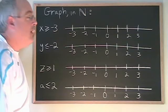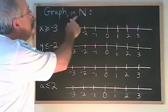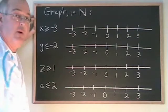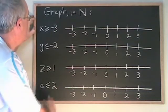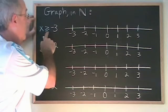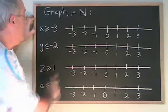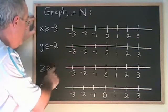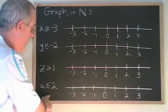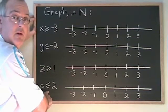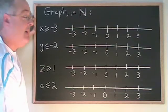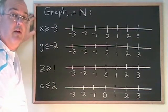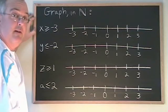Here we are being asked to graph within natural numbers the following equations. All of these equations are inequality symbols with the extra little line under them: greater than or equal to, less than or equal to, greater than or equal to, less than or equal to. You have to pay careful attention to whether or not that little line is there when you're reading the equation, so that you can be sure to get your answer right.